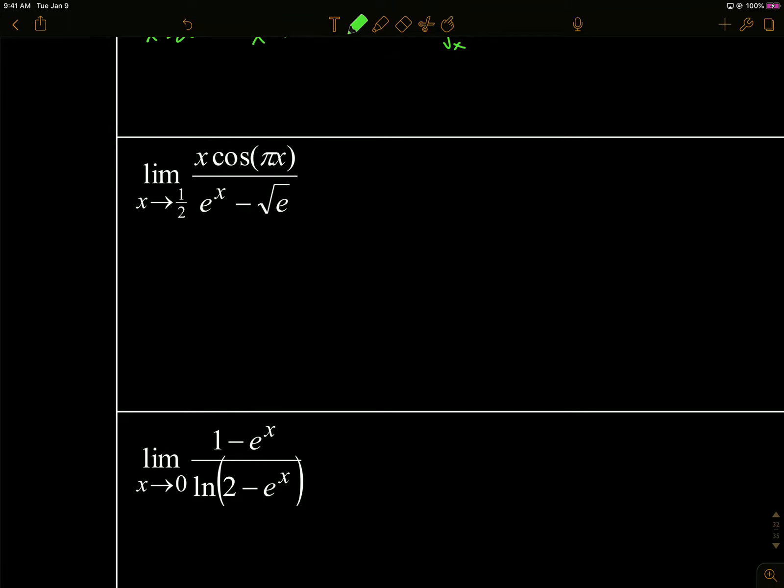Limit as x goes to one half. If I plug it in, I get an indeterminate form, so let's start doing L'Hôpital. So this is product rule. I'm going to get one times cosine of pi x plus recopy the x times negative pi sine of pi x, all over e to the x. Then if I plug in my one half, that's going to be cosine of pi over 2 plus one half negative pi sine of pi over 2, all over e to the one half.